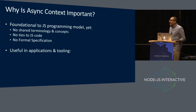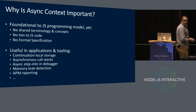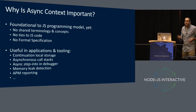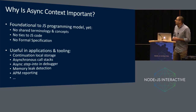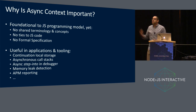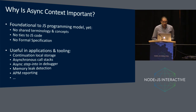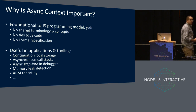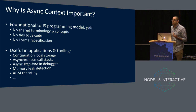Why is this ability to answer how did I get here important? It's also important in applications and tooling. Continuation local storage is one — in that case, you want some ambient key-value lookup analogous to thread local storage. You want to be able to say: get me some value associated with my request one. Another thing I'll call out is memory leak detection. This is a motivating example for why this is something foundational and should be available across the entire stack.